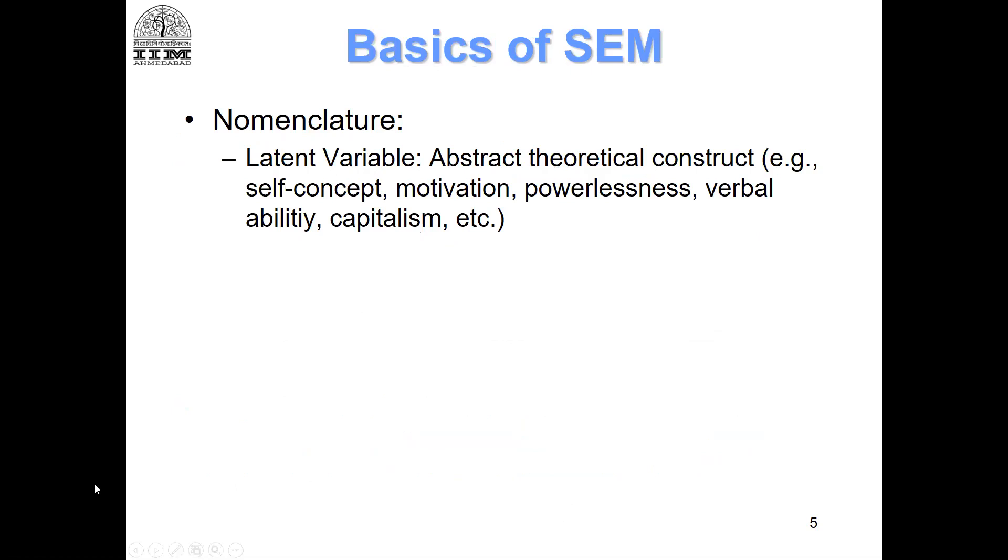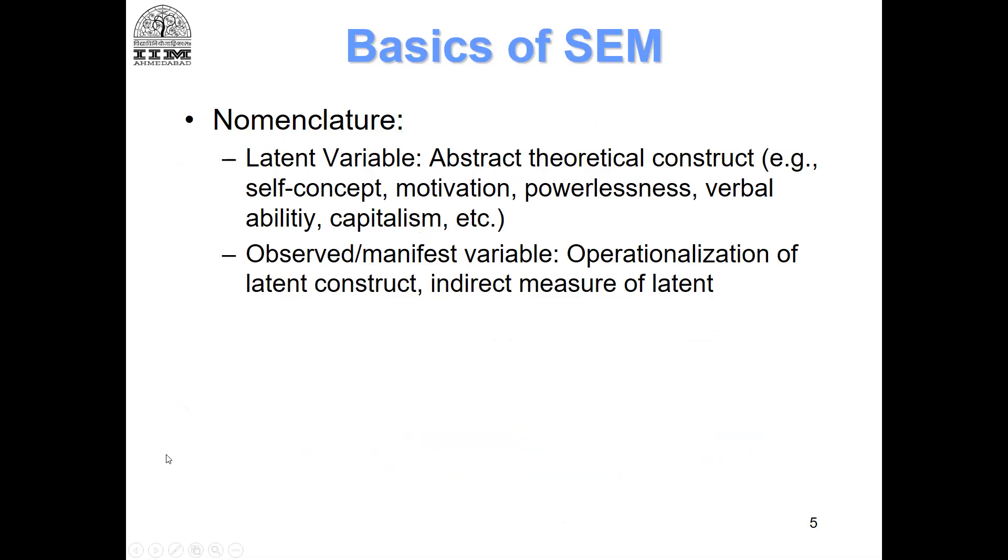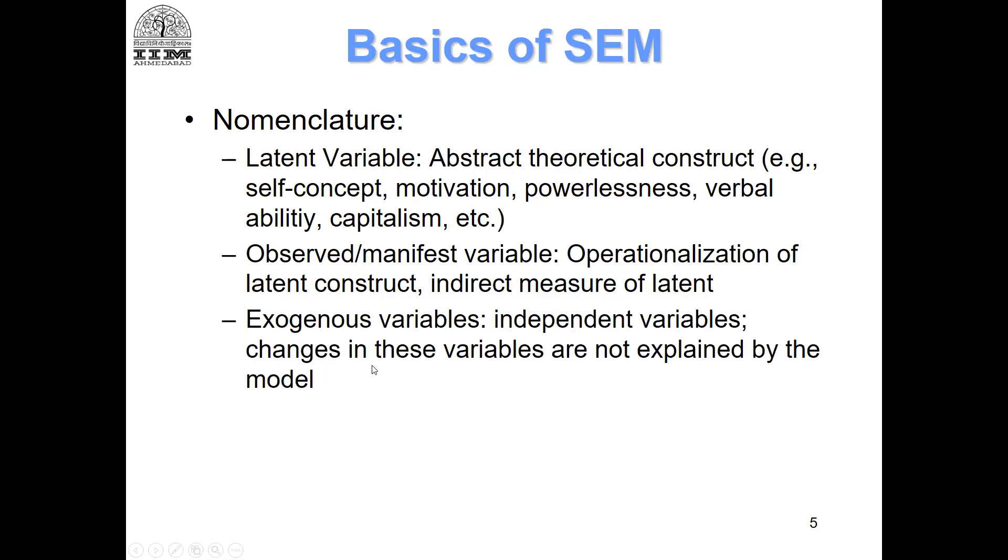Right, now let us look at the nomenclature. We have already been talking about this in our discussions. So latent variable is the abstract theoretical construct. Then we have the observed variable, which is basically the operationalized latent construct. All these measures on which we are going to collect the data from the sample are examples of observed variable. Then there are exogenous variables, which are the independent variables in our model, and the endogenous variables are the dependent variables.